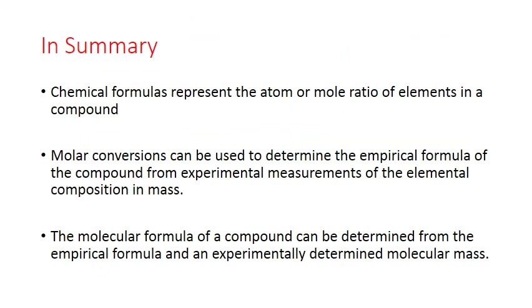In summary: chemical formulas represent the atom or mole ratio of elements in a compound. Molar conversions can be used to determine the empirical formula of a compound from experimental measurements of elemental composition and mass. The molecular formula of a compound can be determined from the empirical formula and an experimentally determined molecular mass.